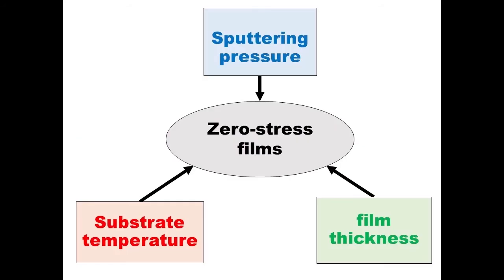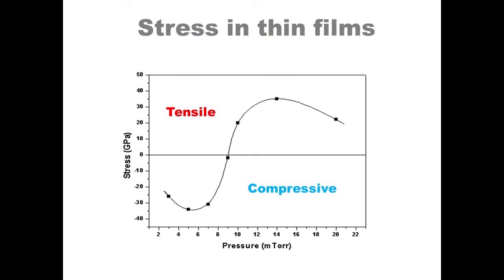Now let's move to Part 2, the experimental procedure. A better niobium-copper interface is achieved with a stress-free film. The sputtering parameters governing stress are mainly three: substrate temperature, argon pressure, and film thickness. The role of substrate temperature is the simplest: the higher the temperature, the lower the stress. Regarding argon pressure, the situation is more complex — there is a critical pressure where stress passes from tensile to compressive, and for zero-stress films, this is the operating point to target.